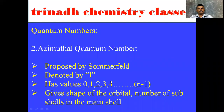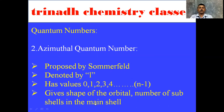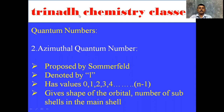The second one is the Azimuthal Quantum Number. It is proposed by Sommerfeld and is denoted by the letter small l. It has values 0, 1, 2, 3 and so on up to N-1. It gives the shape of the orbital and the number of sub-shells in the main shell.